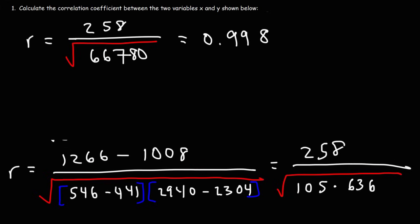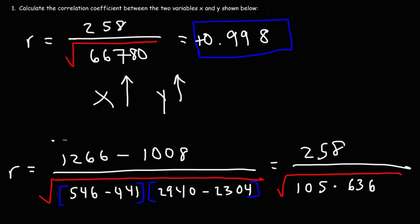This r value is very high, indicating a very strong linear relationship between the x and y variables in this problem. The fact that it's positive tells us the slope is positive — there's a direct relationship between x and y, meaning as x increases, y increases. Now you know how to calculate the correlation coefficient between two variables.